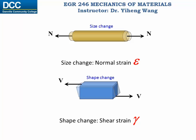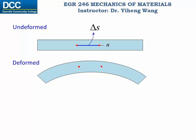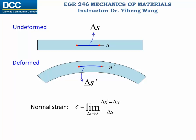Now let's look at the definition of these two strains. For a member before deformation, let's draw a random axis n on it. Along this axis there are two points, and the length between these two points along this axis is delta s. After deformation, the original axis n has been deformed into axis n prime, and the distance between the same two points along this deformed axis n prime has a new length of delta s prime. When the original length delta s approaches zero, the two points approach the same point, and the normal strain at this point, defined specifically for the orientation along axis n, is epsilon equals the new length delta s prime minus the original length delta s, divided by the original length delta s.